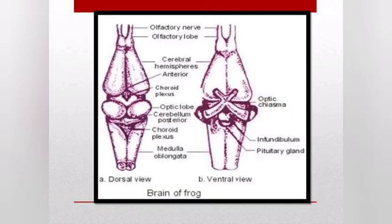The brain contains the following parts: olfactory nerve, olfactory lobe, cerebral hemisphere, anterior choroid plexus, optic lobe, cerebrum, posterior choroid plexus, medulla oblongata, infundibulum, pituitary gland, and optic choroid plexus. The dorsal and ventral views of the brain of the frog are shown to help you understand.